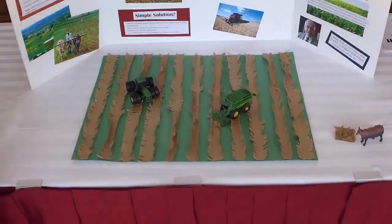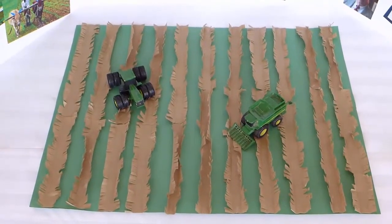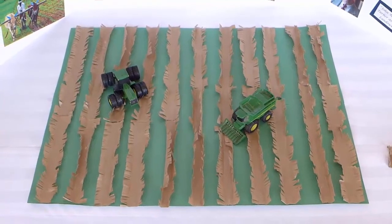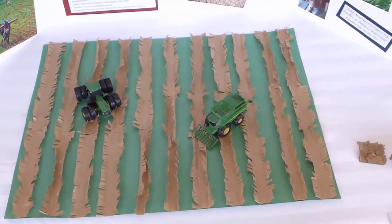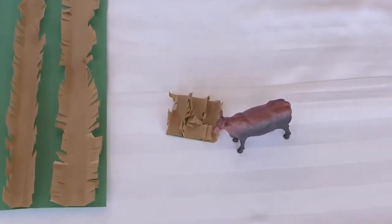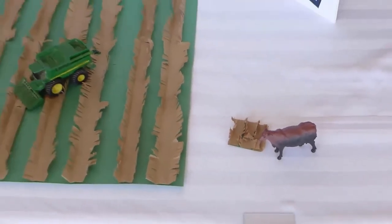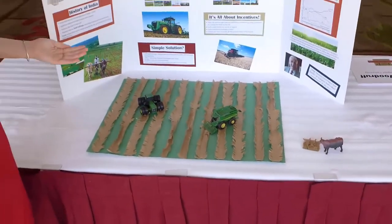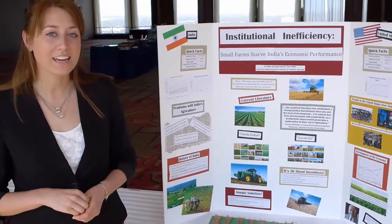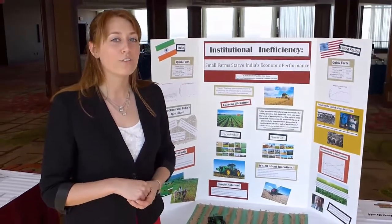This represents the United States. It has an area of 434 inches, which is representative of the 434 acres of average farm size in the United States. To the right is the average farm size of 2.87 acres in India, represented by 2.87 inches. The tractors represent the presence of lots of capital on United States farms, compared to the oxen used to farm in India.